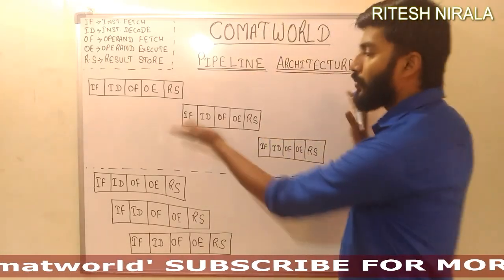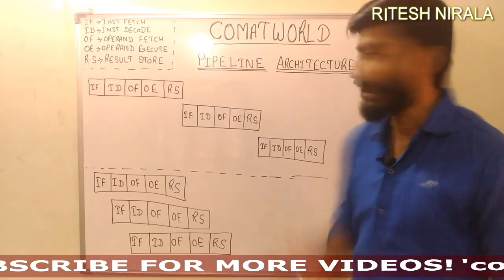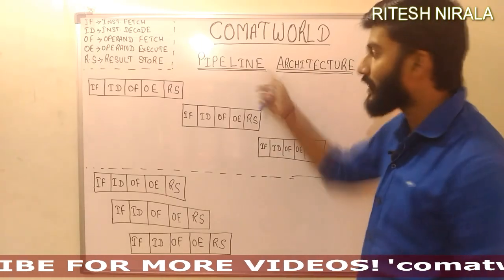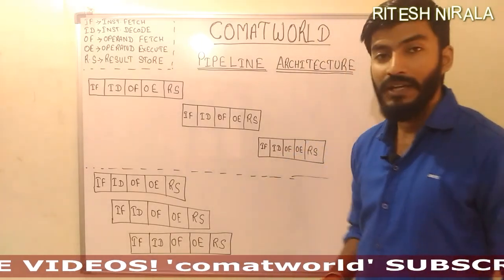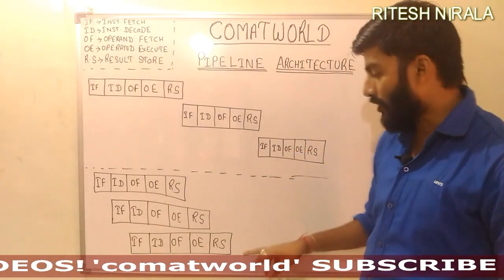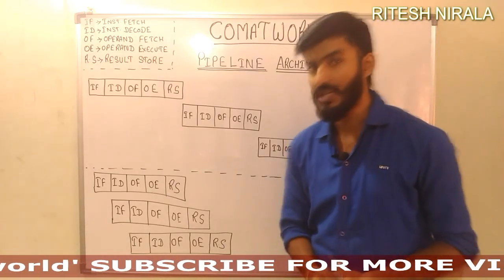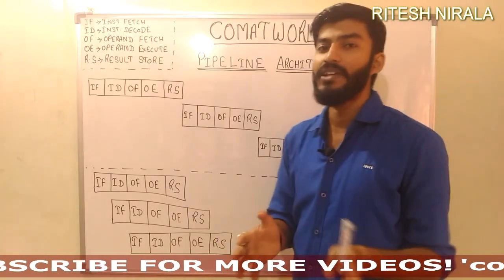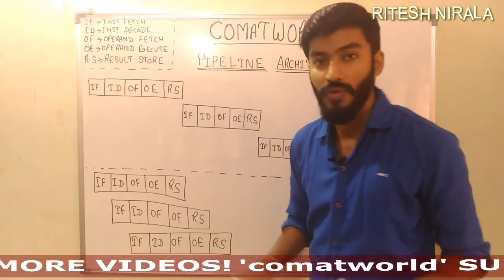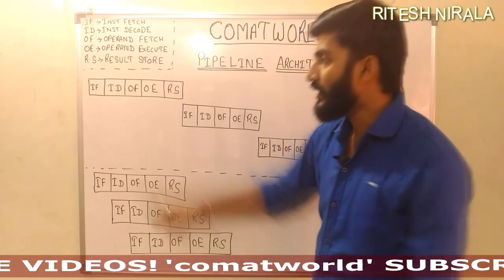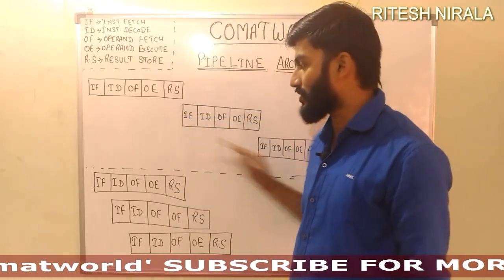Now let's understand pipelining. Suppose there is a non-pipeline architecture and a pipeline architecture — let's see them and understand the difference. If, like 8085, it does not support pipeline, what happens? In the non-pipeline infrastructure, suppose we have three instructions to execute.